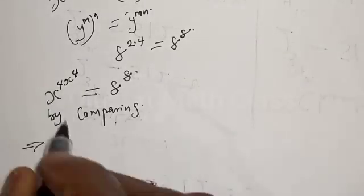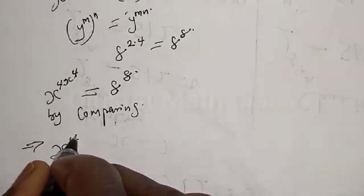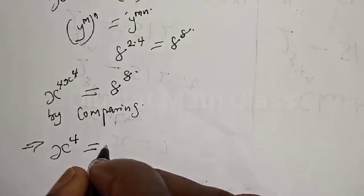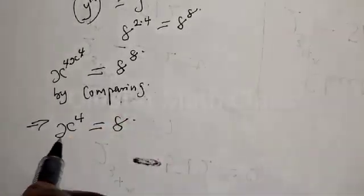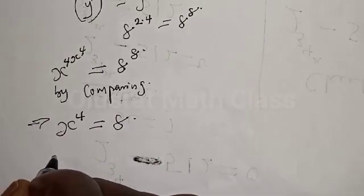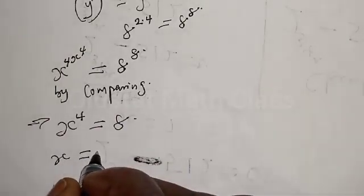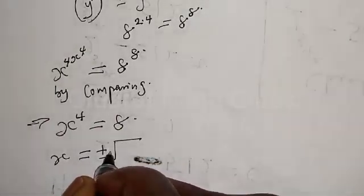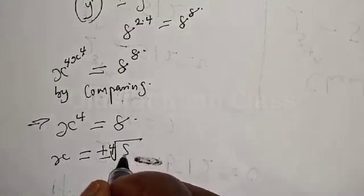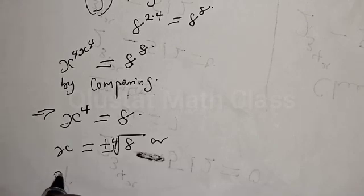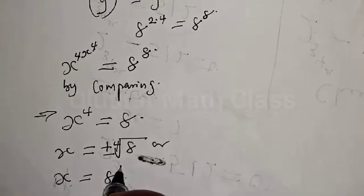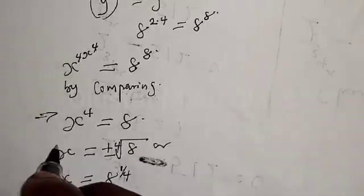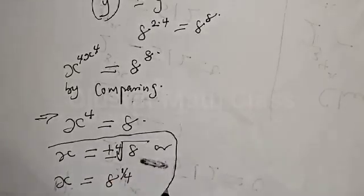This implies that s raised to power 4 is equal to 8. Since s raised to power 4 equals 8, we want to find the value of s. Therefore s is equal to plus or minus the fourth root of 8, or equivalently s is equal to 8 raised to the power of 1 over 4. That is our final answer.